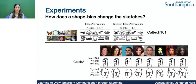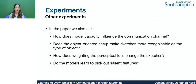Finally, we ask how a shape bias influences the sketches. We present results on experiments with Caltech and CelebA datasets. To introduce a shape bias, we replace the visual system with a VGG16 pre-trained on stylized ImageNet. The agent's communication rate is similar in both cases, but with a shape bias, sketches produced by agents start to be visually more correlated with the input images. We run many other experiments — for example, how model capacity influences the communication channel — details can be found in the paper.